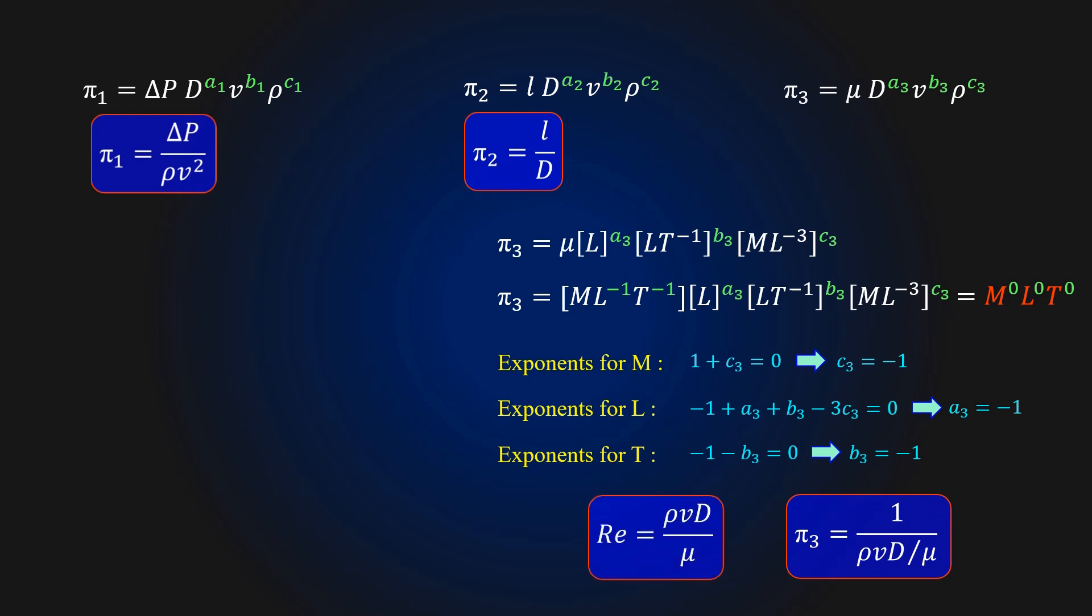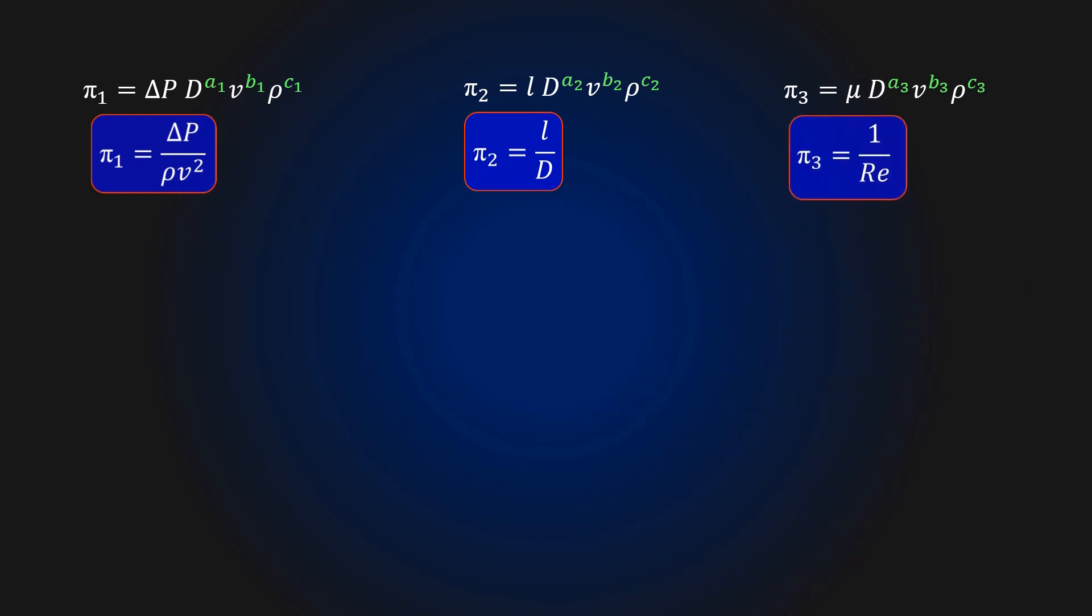The term rho vd by mu is known as Reynolds number, named after the English engineer Osborne Reynolds. On rearranging we get pi3 as 1 by Re. So you can see that Buckingham pi theorem can predict the functional relationship between dimensionless groups. However, this cannot predict the exact mathematical form of the equation. This is a fundamental limitation of the dimensional analysis.